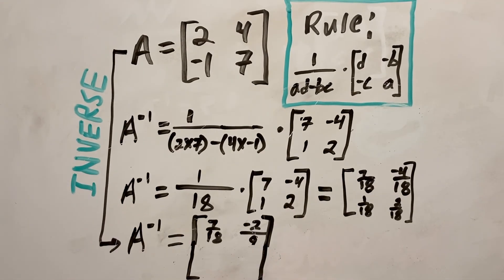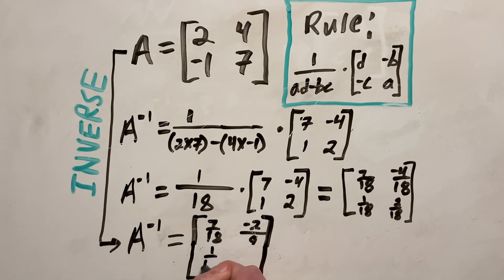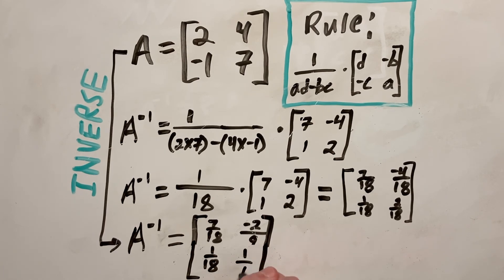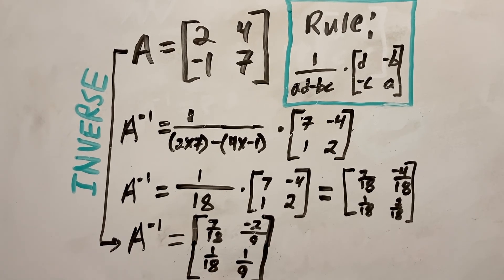Now I'll just zoom out a little and continue, so 1 over 18 stays as 1 over 18, and 2 over 18, both numbers can be divided by 2 to give us 1 over 9.